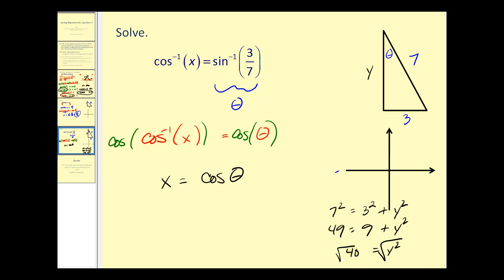Taking the square root of both sides, we have y equals the square root of 40. Well, 40 is 4 times 10, so this would be 2 square root of 10. We don't have to worry about plus or minus 2 square root of 10 because we knew from the beginning since the inverse sine was positive we were going to be in the first quadrant.